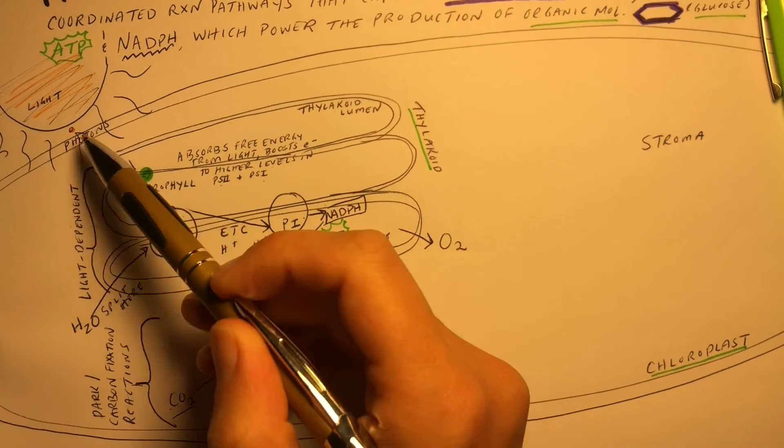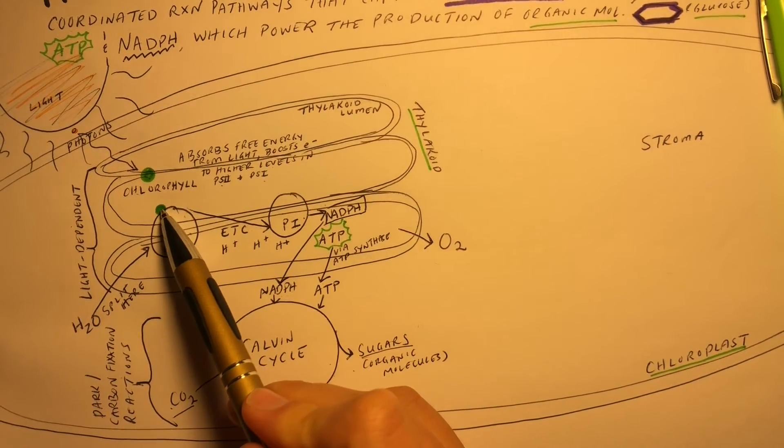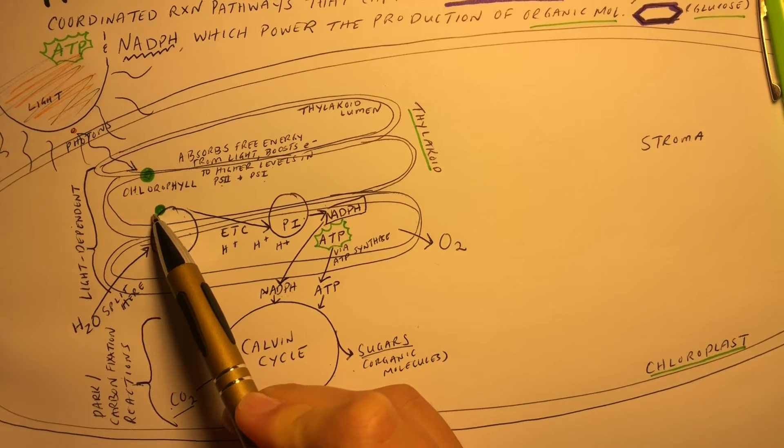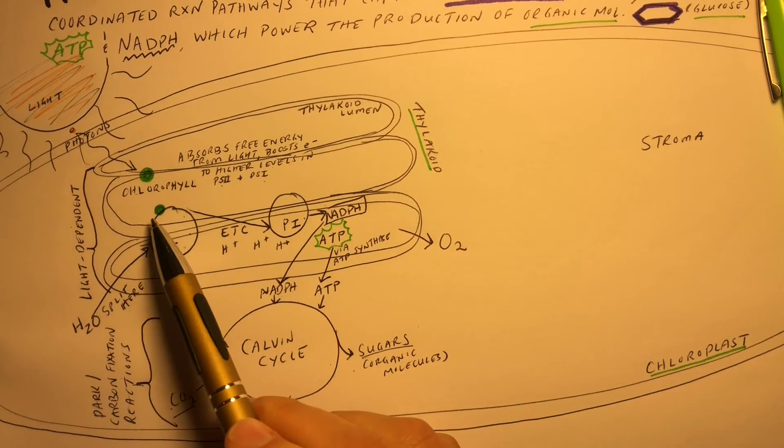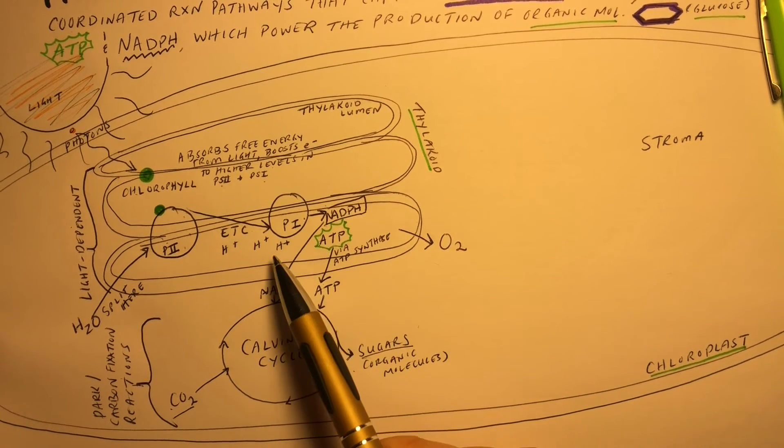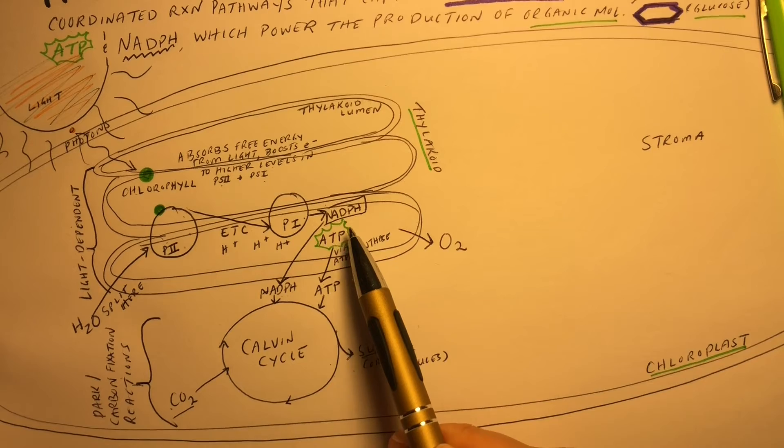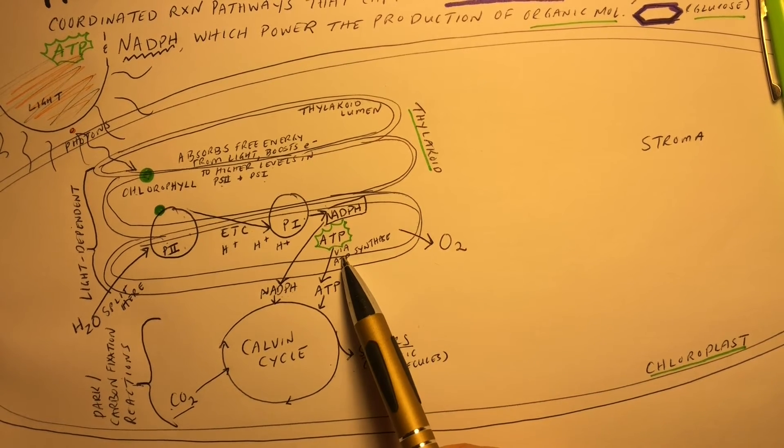Let's look at our process again. Light energy is captured in the chlorophyll, which is going to boost electrons to higher levels in photosystems 2 and photosystems 1. These will travel down the electron transport chain, establishing a proton gradient, which will power the production of ATP via ATP synthase.